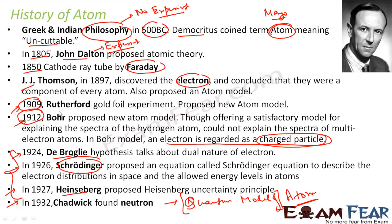These are all models — Thomson model, Rutherford model, Bohr model — and all of these had issues; they are incorrect. The correct model is the quantum model of atom. The only correct model is the quantum model of atom. Thomson, Rutherford, and Bohr are incorrect models of the atom. We are studying them because we want to understand the history of the atom, but experimentally you can prove that all three models are incorrect. The only correct model is the quantum model of atom.